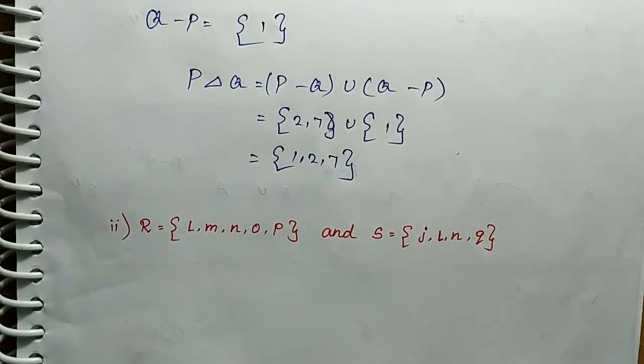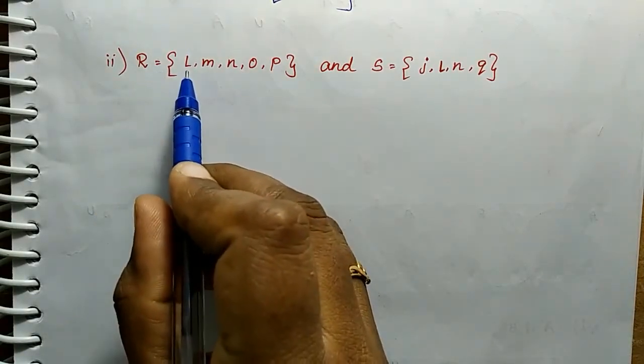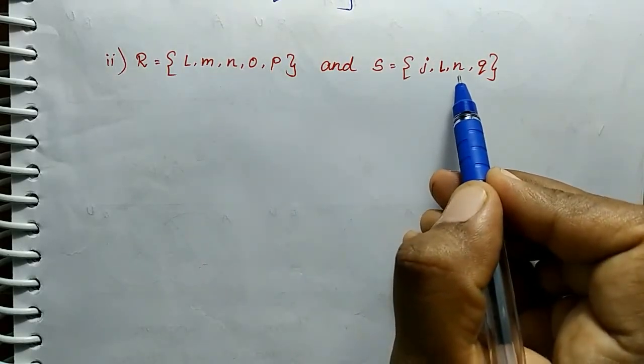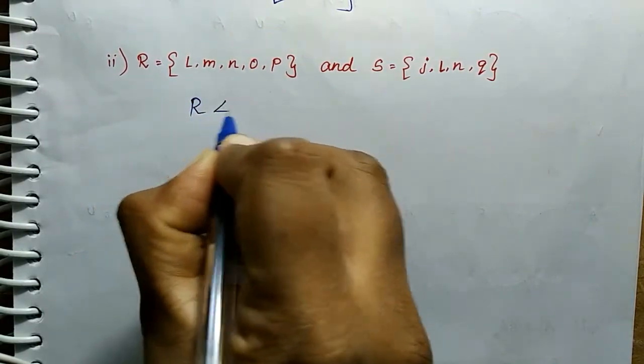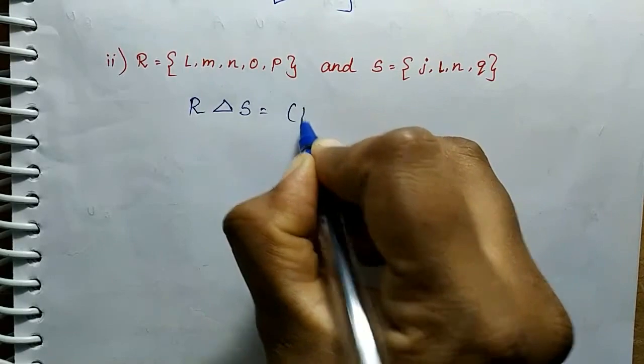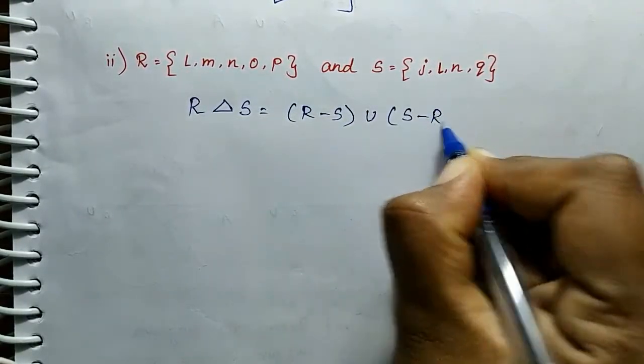Second sum. R is equal to set of L, M, N, O, P. S is equal to J, L, N, Q. So now we go to R Symmetrical S is equal to R minus S union S minus R. Find. Okay. So here.